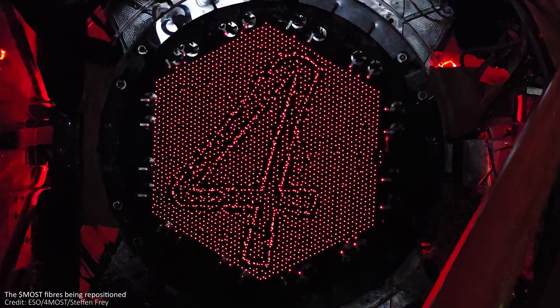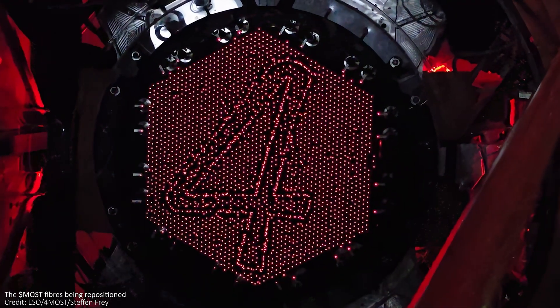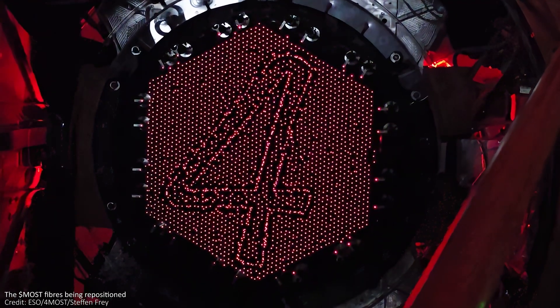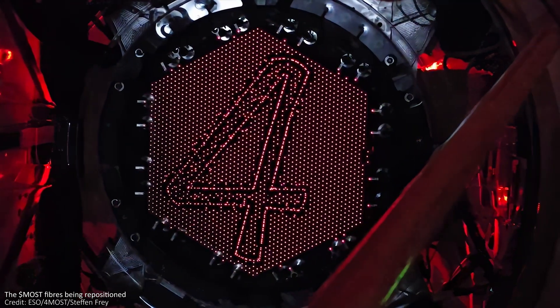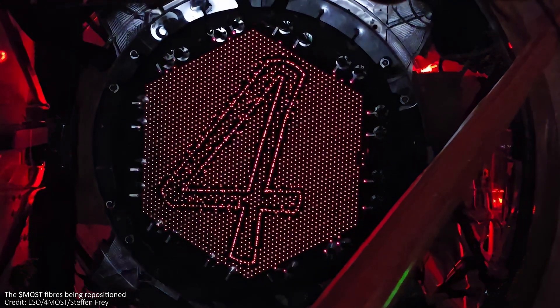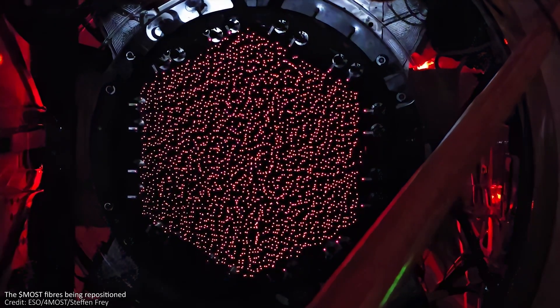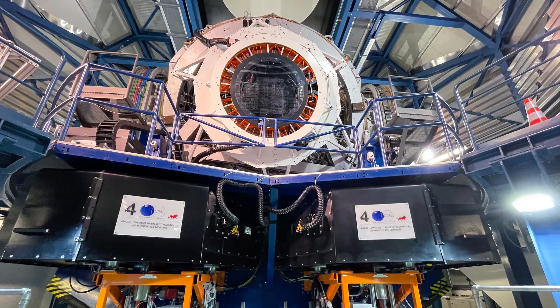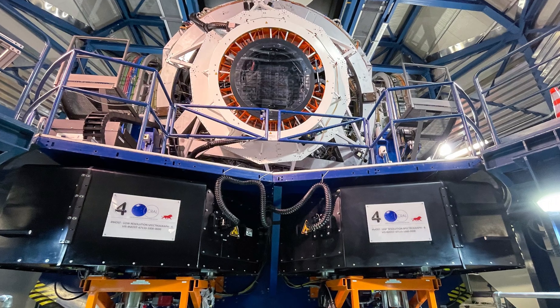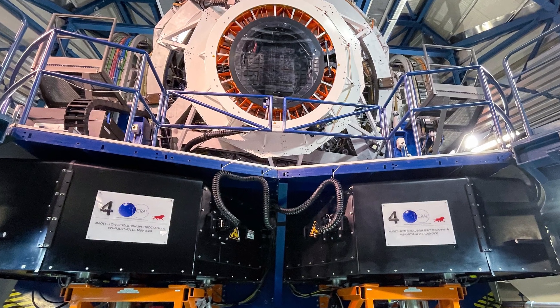A few minutes before the next observation needs to start, the next field and targets are selected based on the latest weather and observing conditions, to optimize what it's going to see and how good that data's going to be. During those observations, the fibers transport the light to one of three spectrographs on Foremost, and each can observe around 800 objects simultaneously, and this is where the light gets broken down.